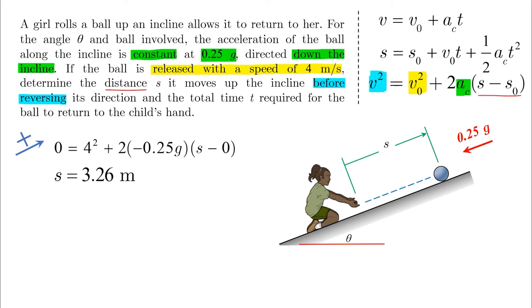Next, the question asks for the total time t required for the ball to return to the child's hand. By returning to the child's hand, we know that from start to finish the displacement is equal to 0, and the only equation that has time and displacement is the second equation.